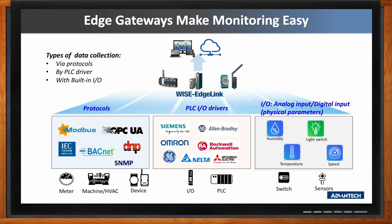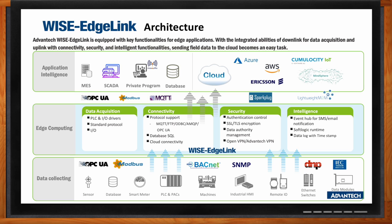Can you explain the architecture of WISE EdgeLink? WISE EdgeLink is edge software pre-installed in Advantech gateways to handle data collection and connection to the cloud, database, and data systems. It supports protocol conversion — you can collect machine information from one protocol and convert it into another to adapt to your system. If you're using public cloud services such as Azure, AWS, or SQL database, it handles the cloud connection process. All you need to do is type in the credential information, then you can fetch data to the cloud and database. It also handles security, PLC drivers, and intelligent event notification functions.